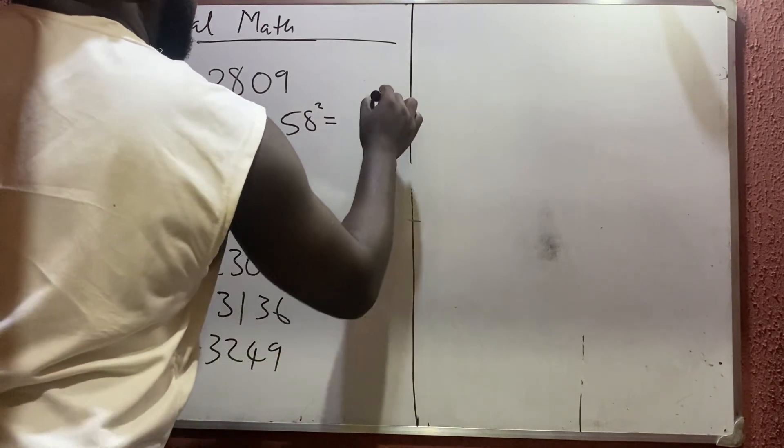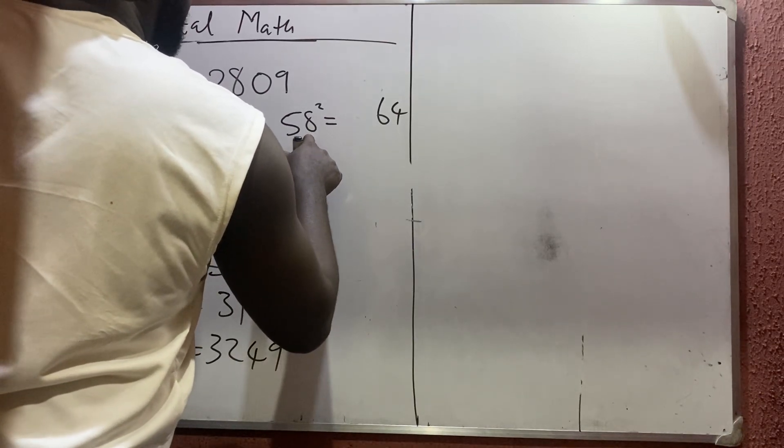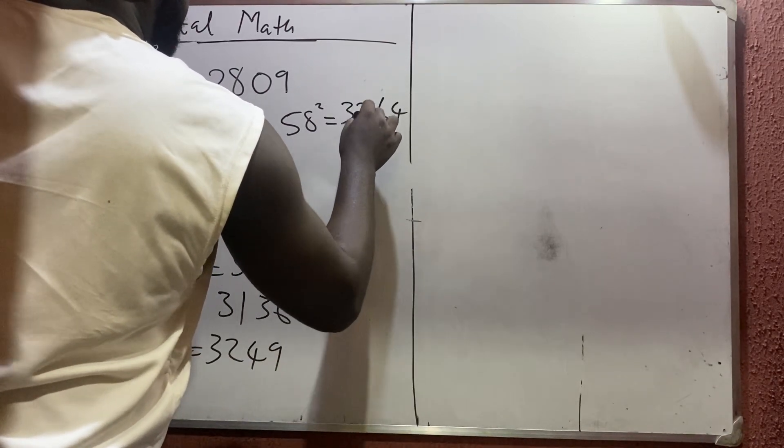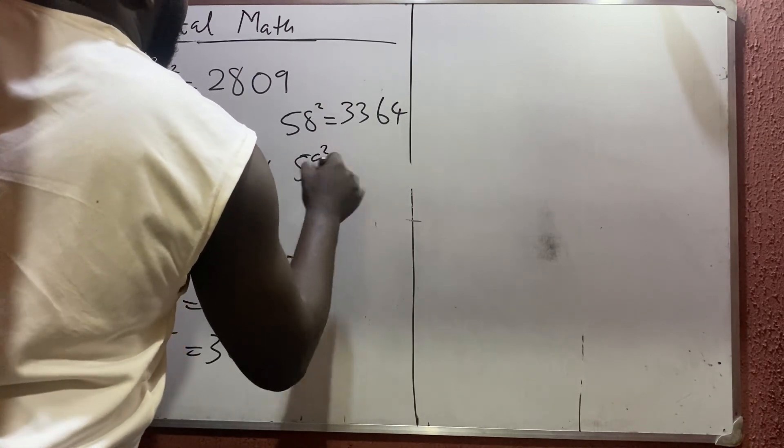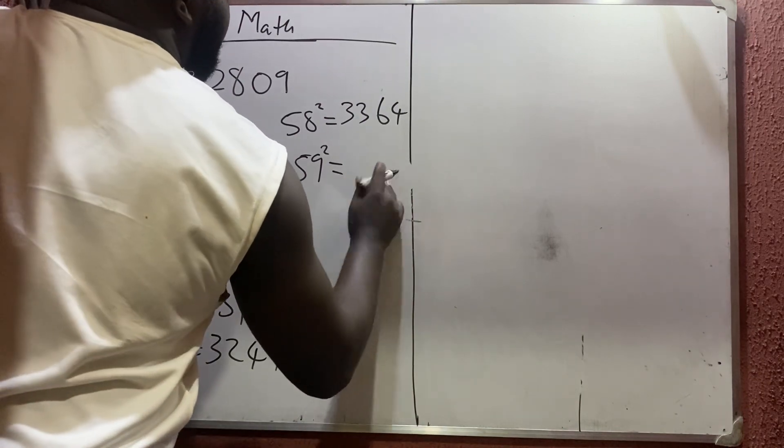59 squared. 9² is... 9 times 9 is 81. So 9² is 81. 5² is 25. 25 plus 9 will give you 34. So that is how it is.